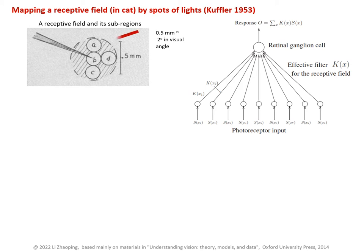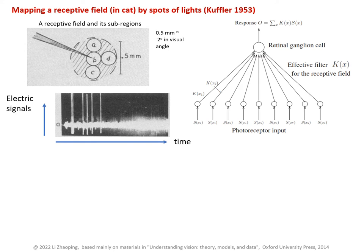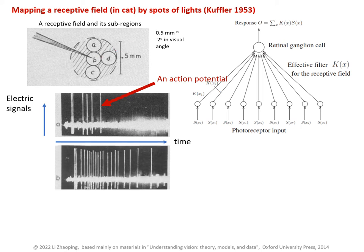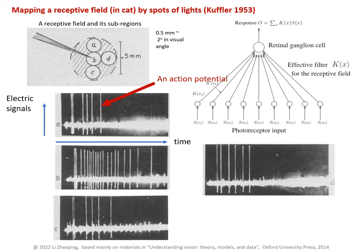For example, when a light is on spot location A, this is the neuron's electric response as a function of time. Here, each spike is an action potential. If the light is on location B, the spiking rate is higher. The light on location C gives a spiking rate similar to light on location A, and similarly on location D. This is an on-centered neuron with the center location at location B.